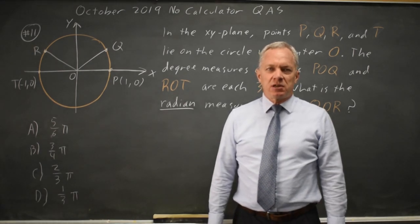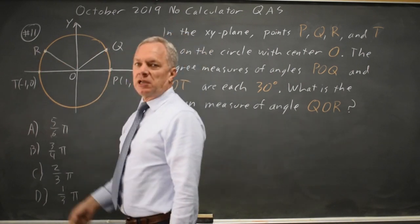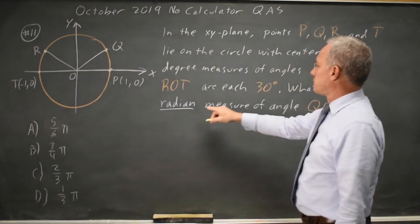This is non-calculator question number 11. College Board is asking us to find the measure of angle QOR and then convert that from degrees to radians.